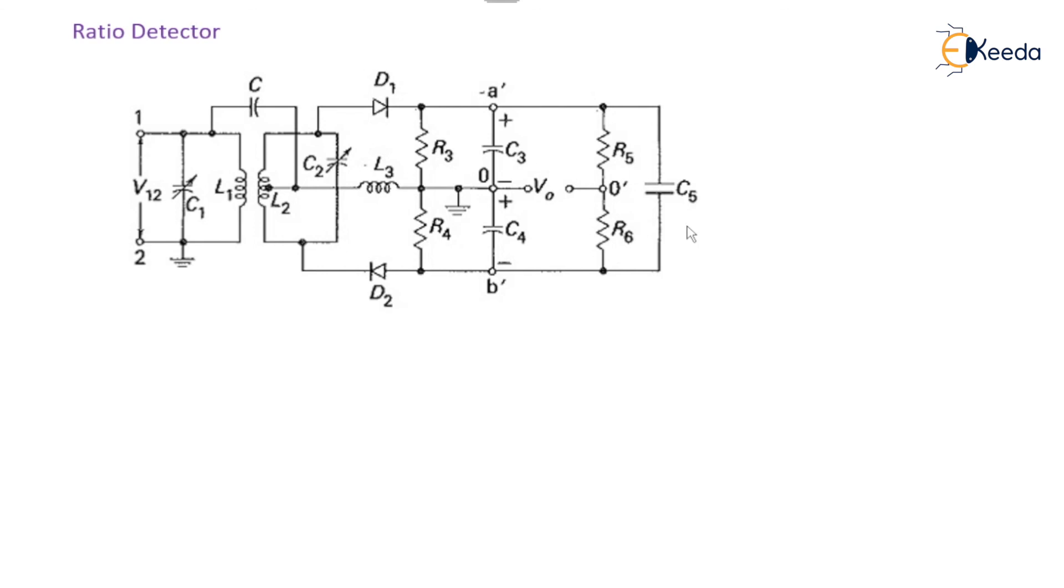So additional limiter in this case is not required. This is all about the phase discriminator and the ratio detector. Thank you for watching.